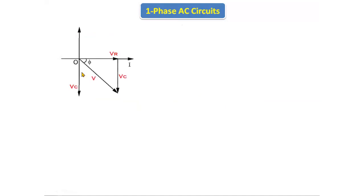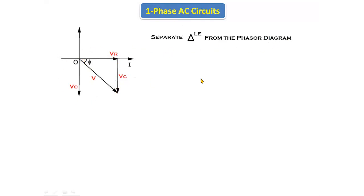If we take a parallel line here — this is the voltage across the capacitor line — we will get Vc. We take this parallel line to form a triangle. It is parallel to this line, so the name of this line is Vc, the voltage across the capacitor. Now it looks like a triangle with Vr, Vc, and V. If we separate this triangle from the phasor diagram, we get a triangle with Vr (voltage across the resistor) at the adjacent side, Vc (voltage across the capacitor) at the opposite side, and V (total voltage) at the hypotenuse. Phi is the phase angle.